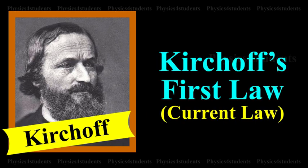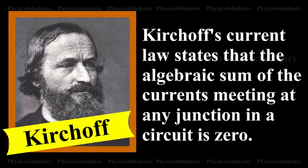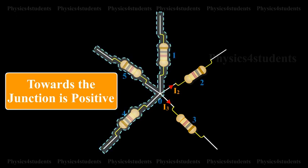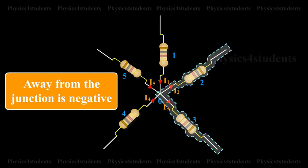Kirchhoff's First Law, i.e. the Current Law, states that the algebraic sum of the currents meeting at any junction in a circuit is zero. The convention is that the current flowing towards a junction is positive, and the current flowing away from the junction is negative.